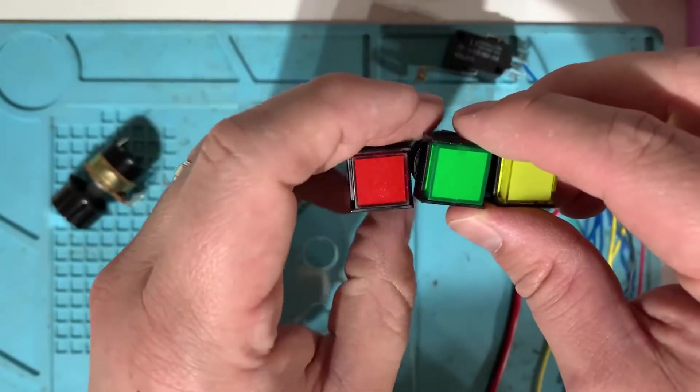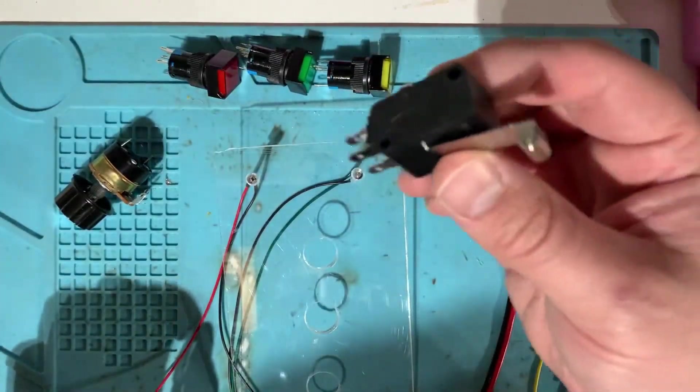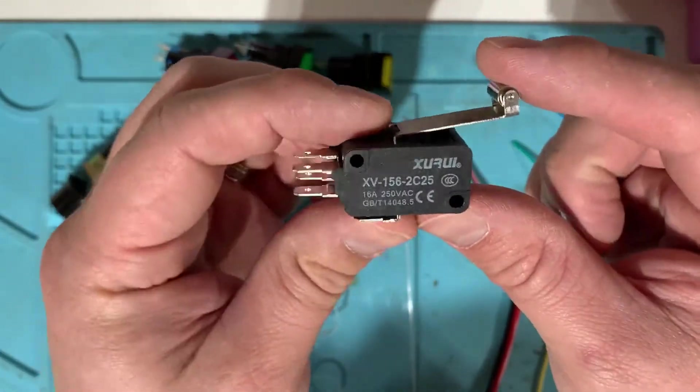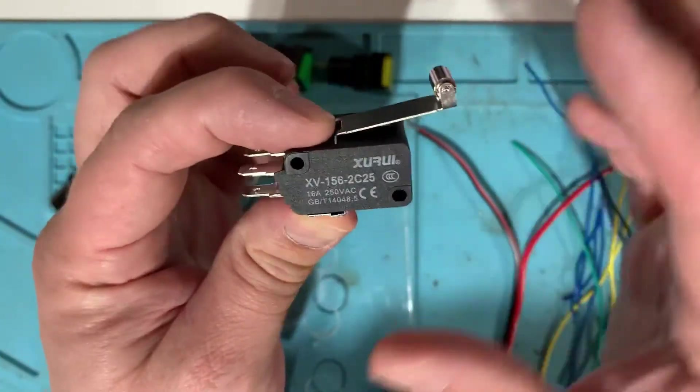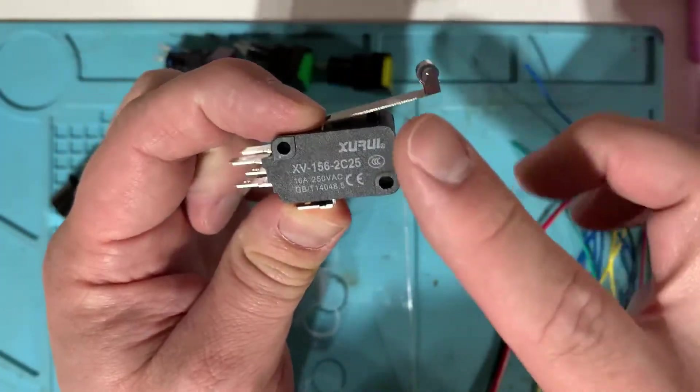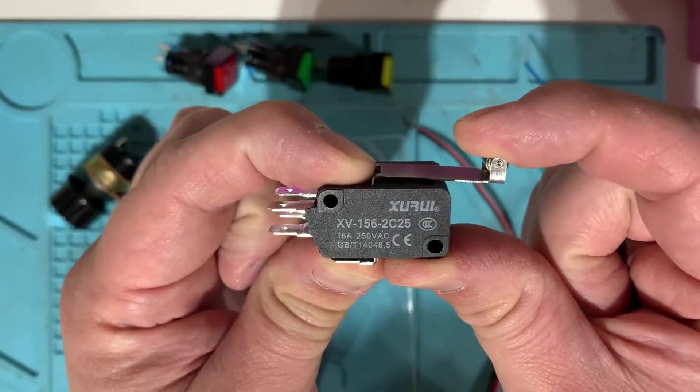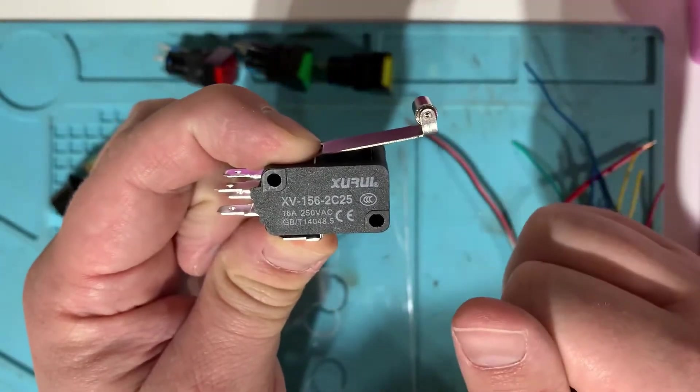So you need a red, a green and the yellow. A limit switch, this is a dual pole, dual throw limit switch. And as we hook these up, when it's up, the red light will be on. And when pressed down, the green light will turn on. This is how we switch when we pull the red handle down.